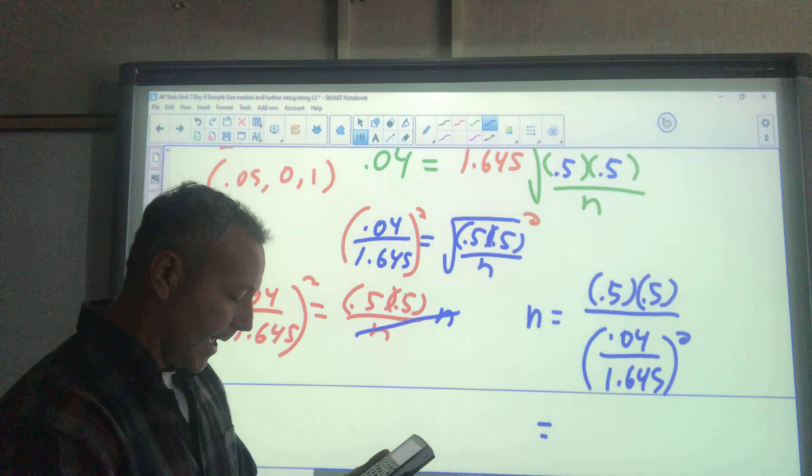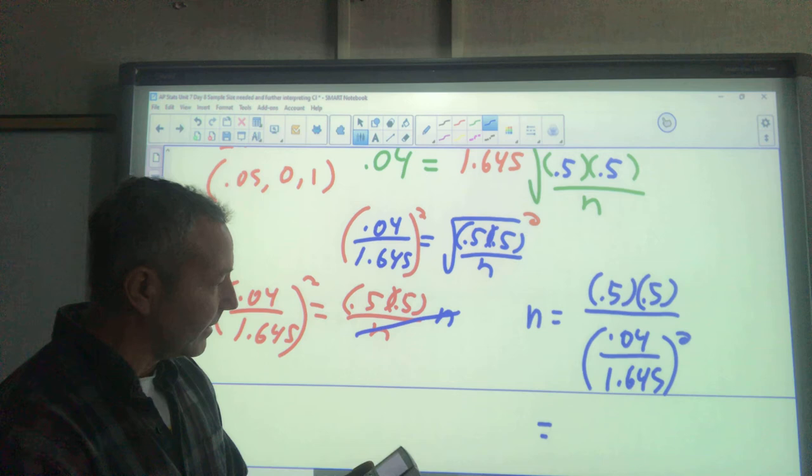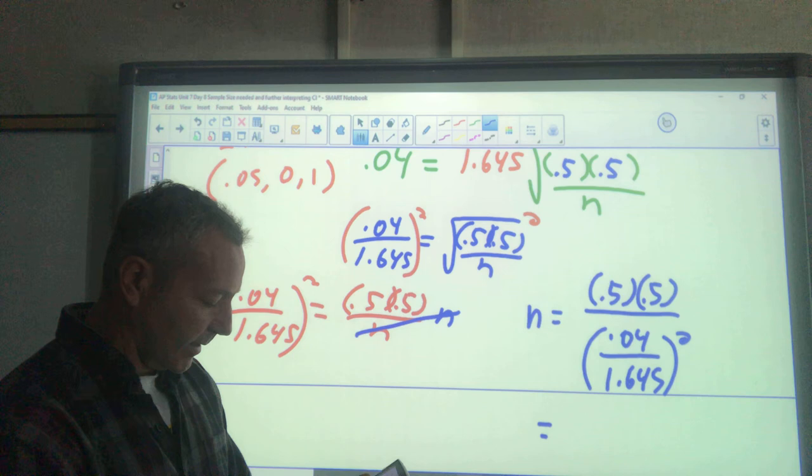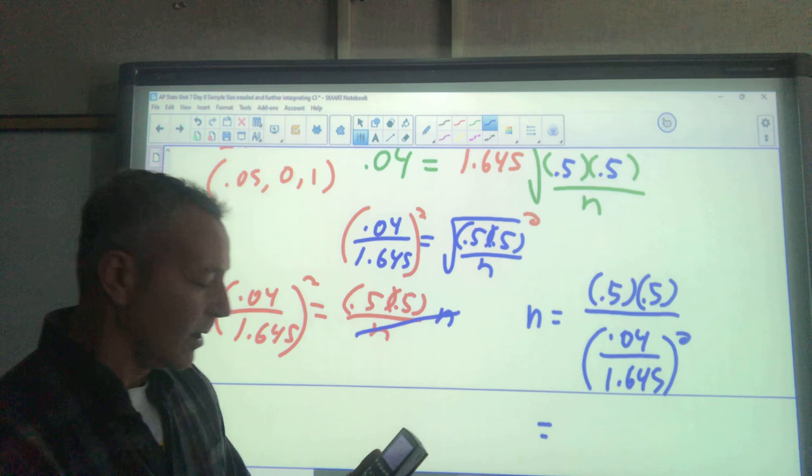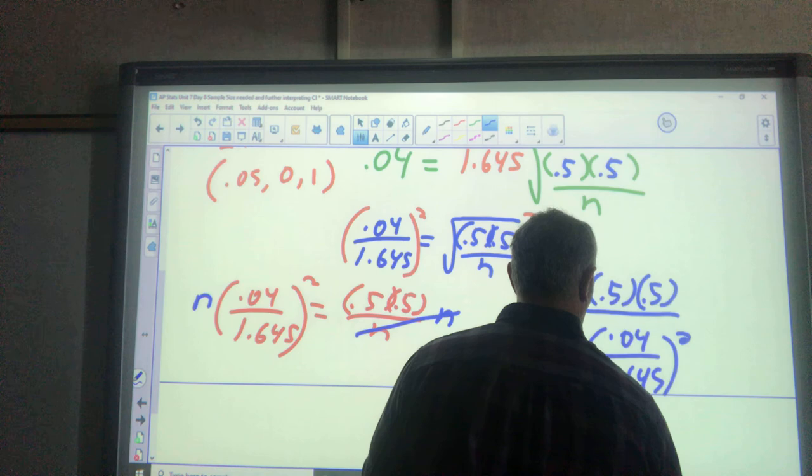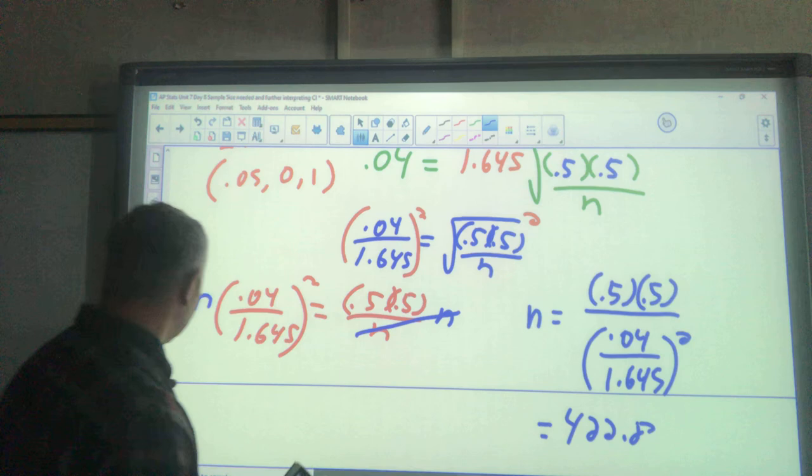So let's get that. I know that's 0.25 on top: 0.5 times 0.5 divided by parentheses 0.04 divided by 1.645, close my parentheses, square that, enter. I got 422.8.